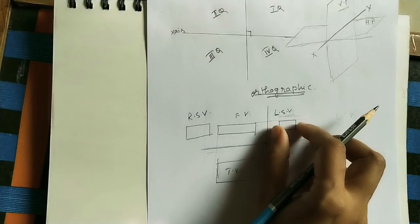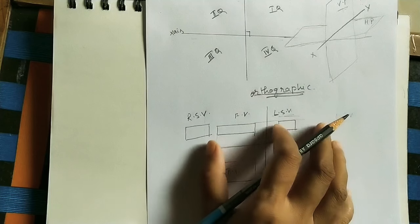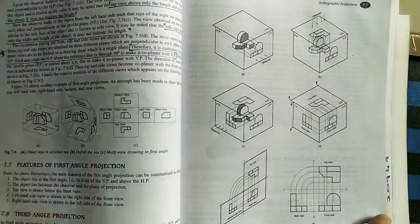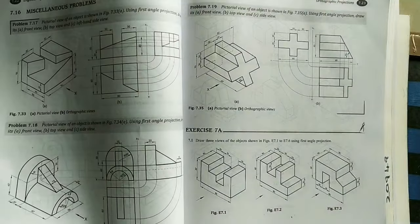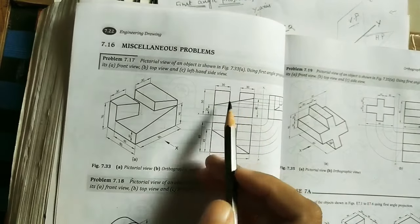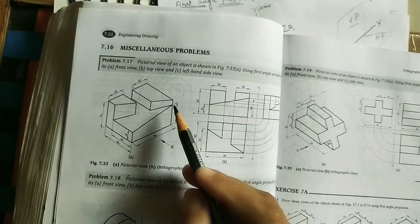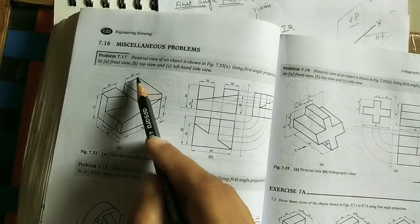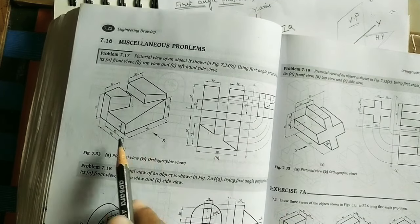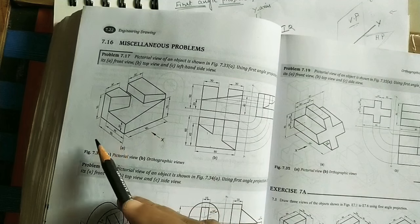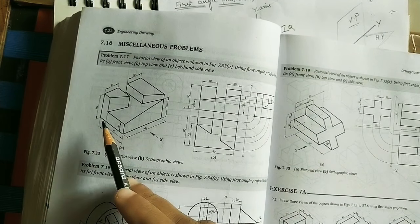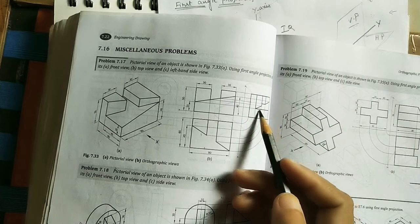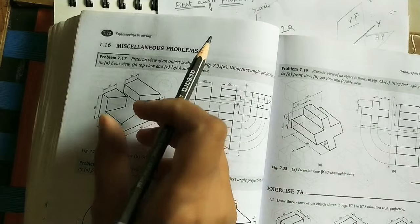This entire two-dimensional diagram is called an orthographic projection. In first angle projection, the front view is above the XY line, the top view is below, the left side view is drawn on the right side, and the right side view is drawn on the left side. This arrangement — front view above, top view below — is called first angle projection. Sometimes this diagram is given and we have to do the isometric view. Wherever the arrow is, that is the front view; below the front view, with the XY line, is the top view.